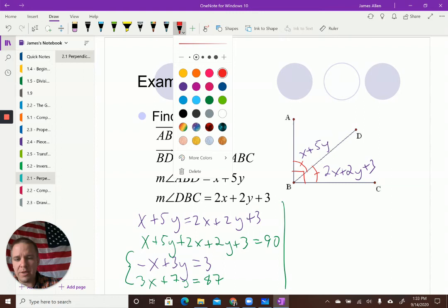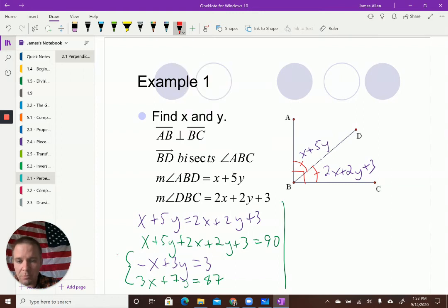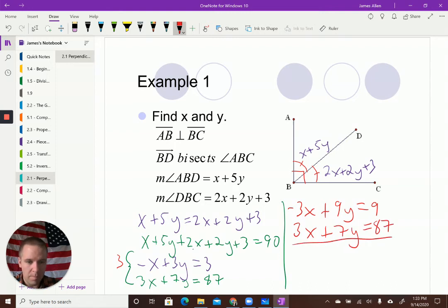I'm going to multiply the top equation by, how about 3? Why 3? Because that's going to cancel out my X's. So I'd have negative 3X. I'm going to go one color now. Plus 9Y equals 9. Got to multiply it to all three parts. The bottom equation is going to stay the same. There we go. My X's are going to cancel. And I'm left with, let's see, that's 16Y equals 96. Alright. That's good stuff. So if I divide by 16, I'm going to get Y equals 6. Okay.